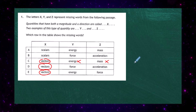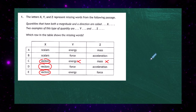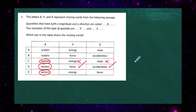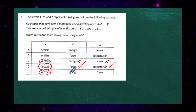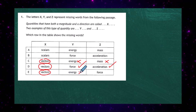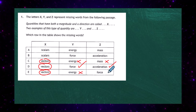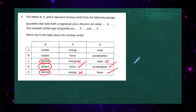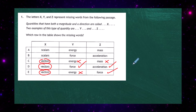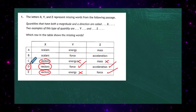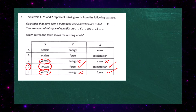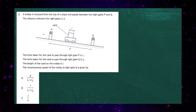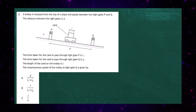Energy and mass are both scalars. Force, on the other hand, is a vector, and so is acceleration. Response D contains energy — not a vector — and force, which is a vector. The response containing two vector examples is force and acceleration, so the correct response is 1D.